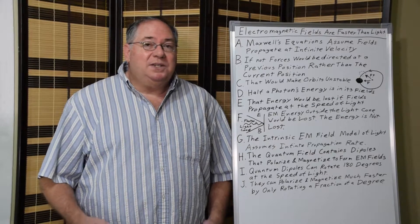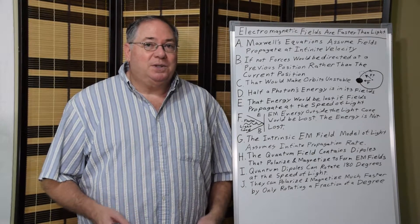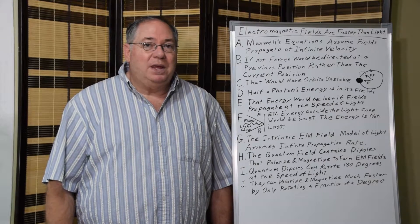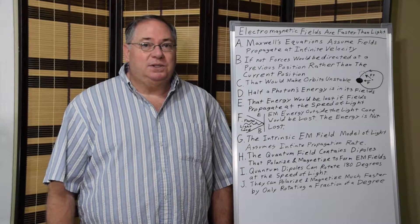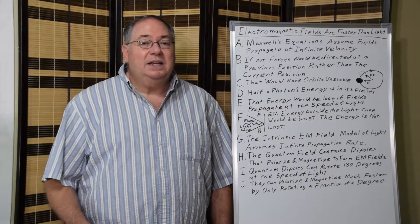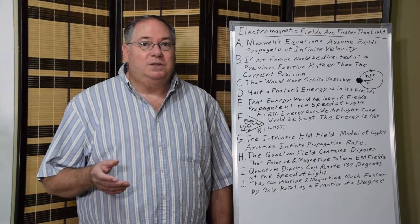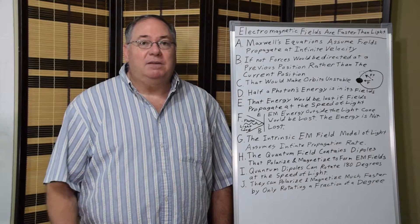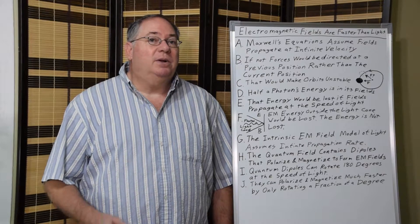We can see this by looking at Maxwell's equations. One of the implicit assumptions in Maxwell's equations is that the electric and magnetic fields propagate faster than the speed of light. This is similar to gravity.